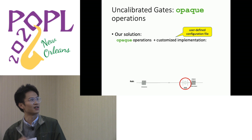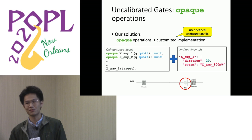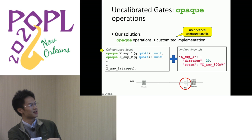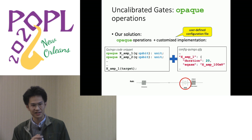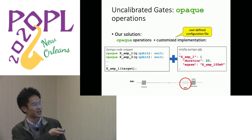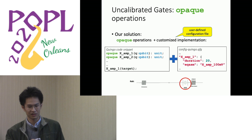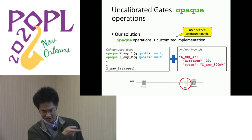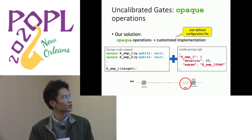Here is a Quingo example for the Rabi experiment. On the left-hand side is a snippet of Quingo code where we declare X operations with different amplitudes. On the right-hand side is the Quingo configuration file, which contains the implementation of these X gates with different amplitudes. Since our underlying architecture is eQASM, we use eQASM instructions to implement these operations.